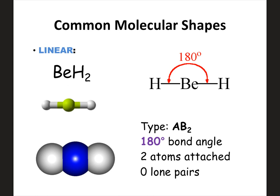Whenever you're determining the molecular shape or molecular geometry of a molecule, draw the dot structure first — even if it doesn't tell you to. Analyze the dot structure to determine the shape; always look at the center atom. Count how many things are attached and how many lone pairs are on the center. For beryllium fluoride, beryllium has two things attached and no lone pairs on the center — that's what makes it linear, with a 180-degree bond angle.